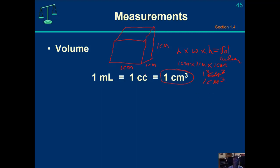One cubic centimeter equals one cc. Many of you going into the medical profession will see syringes with volumes measured in cubic centimeters or cc's. That equals a unit of volume you'll also see on graduated cylinders and volumetric burettes — and that equals one milliliter. So one milliliter equals one cc, or one cubic centimeter.